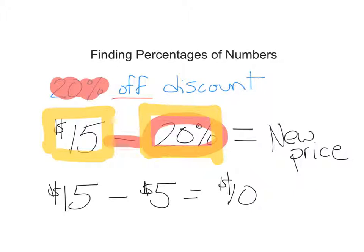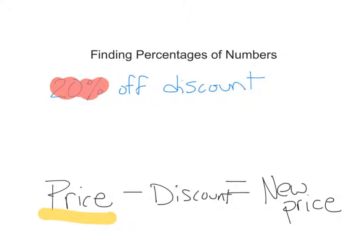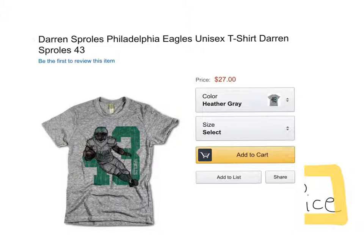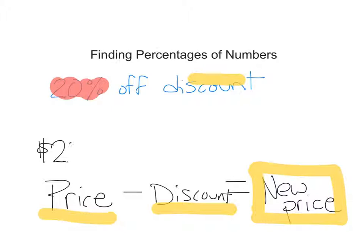Here you can see that we have the price minus the discount to find our new price. So, if we were shopping for this Eagles t-shirt, you can see that the price is $27. So, I can take my price of $27, and here I can see that I have a 20% discount, so I need to find 20% of my price.